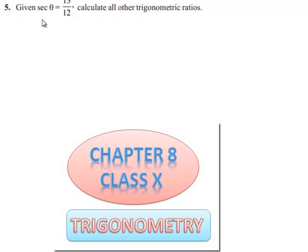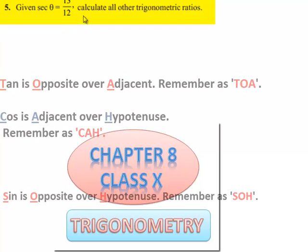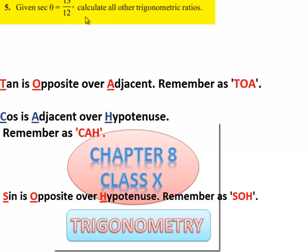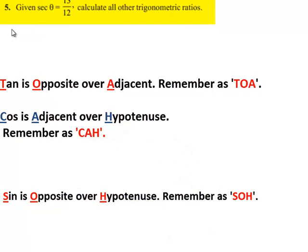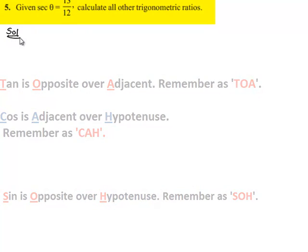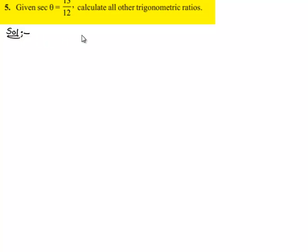Moving on to the fifth question: given that secant theta is equal to 13 by 12, calculate all other trigonometric ratios. Now moving on to the solution, here it is given that secant theta is equal to 13 by 12.